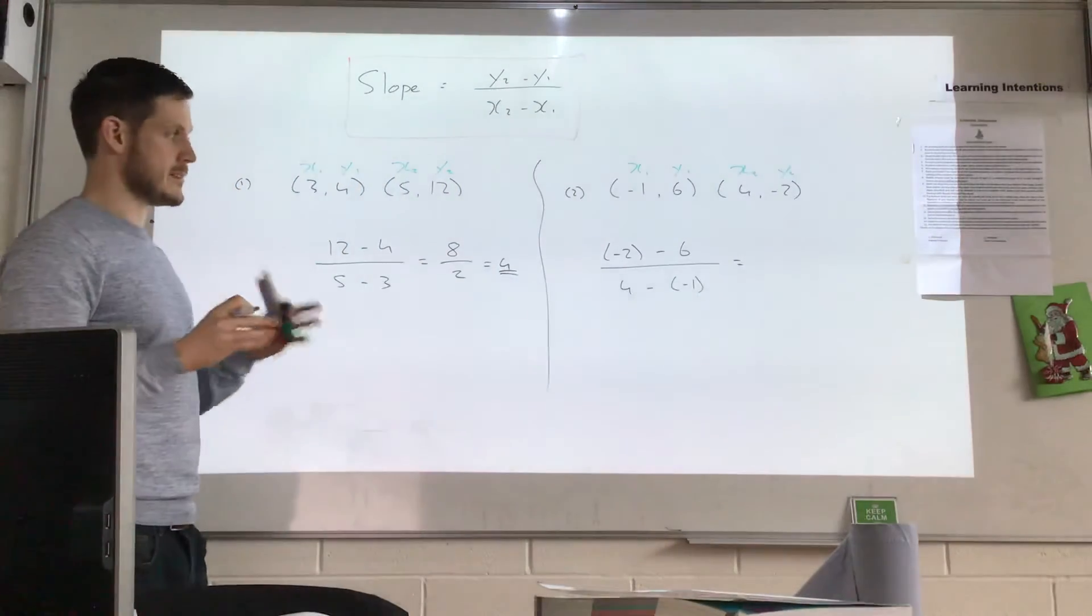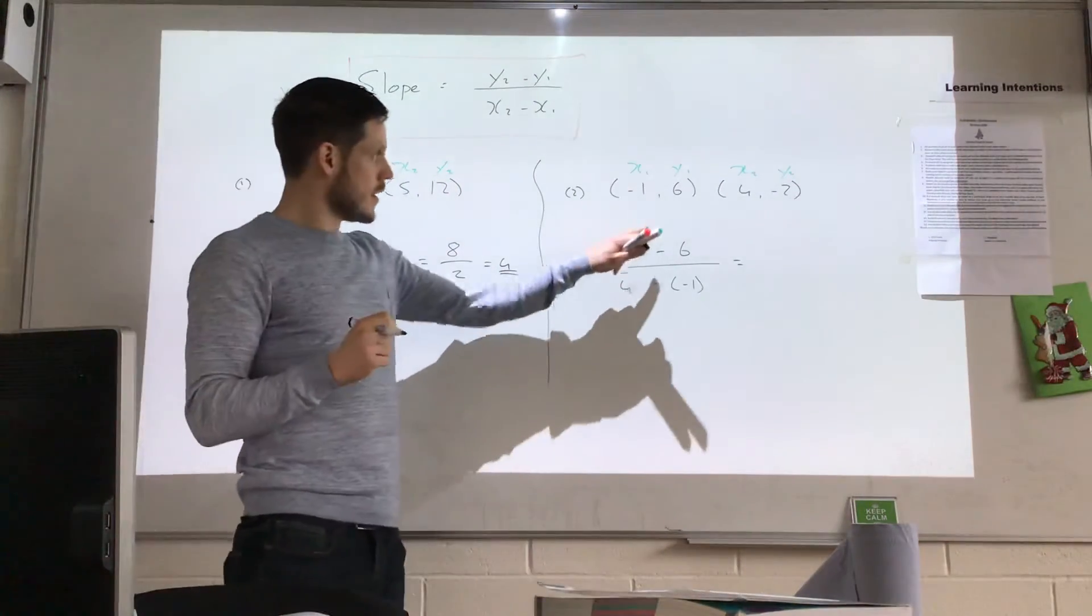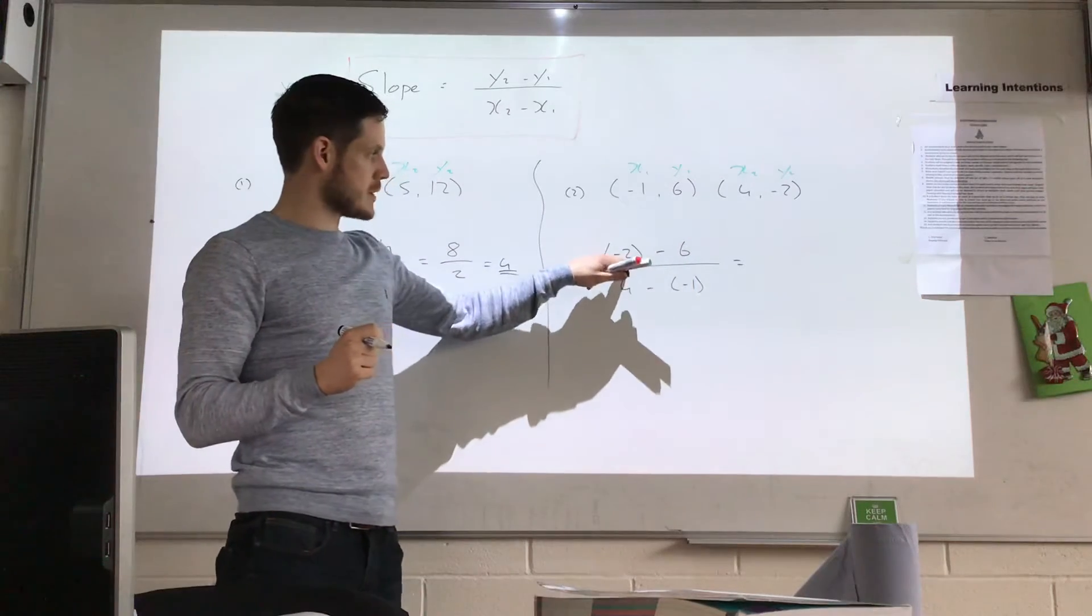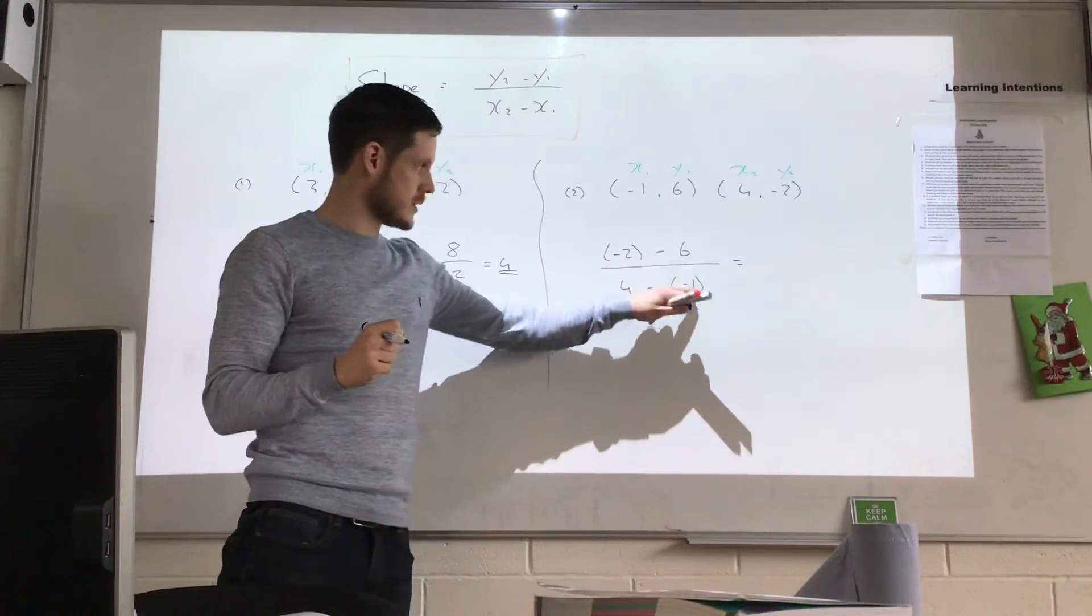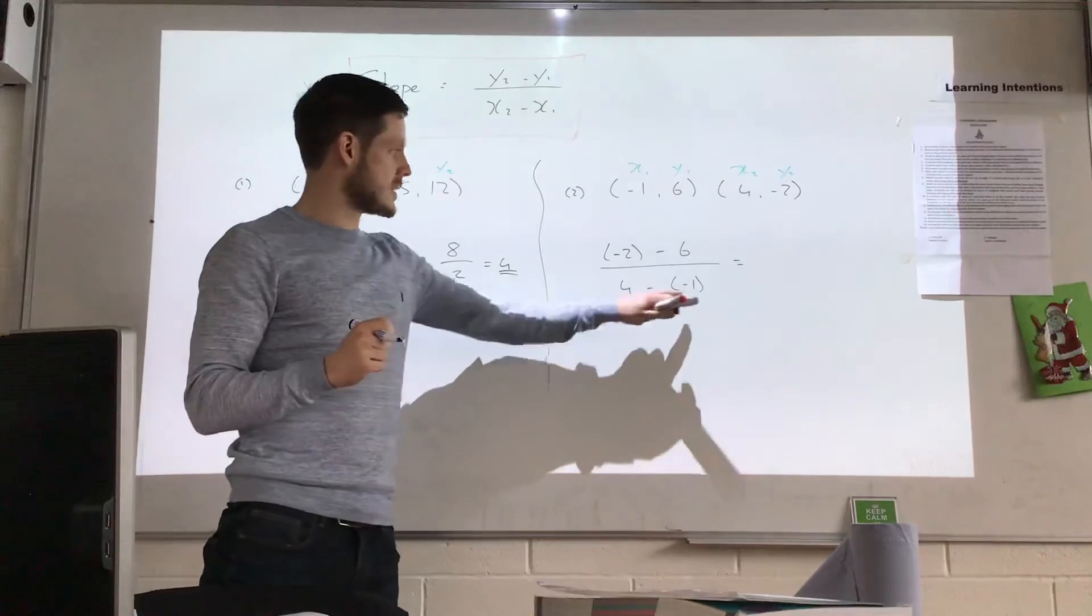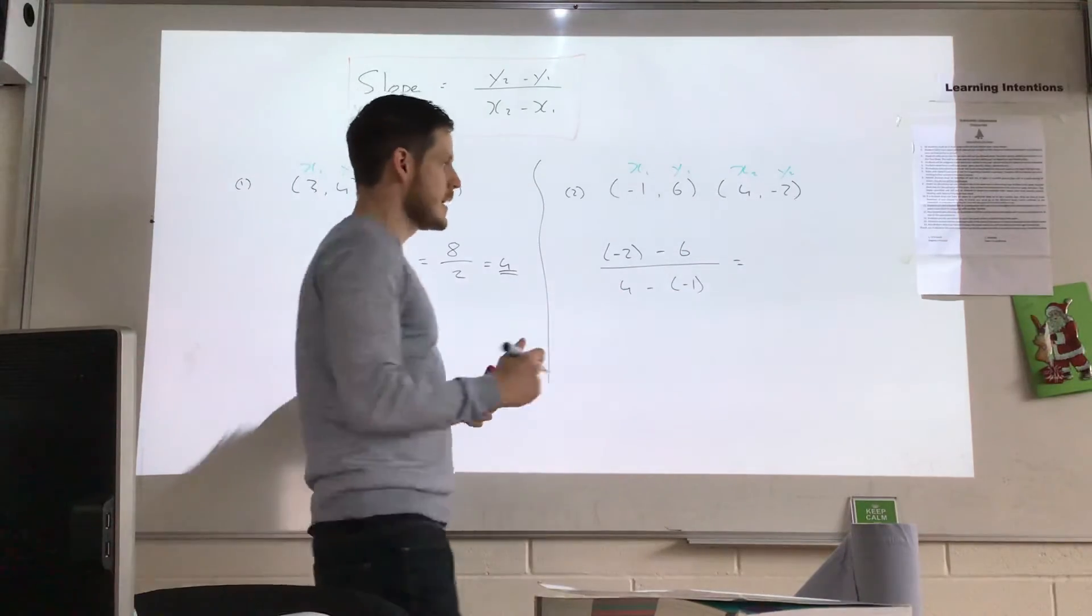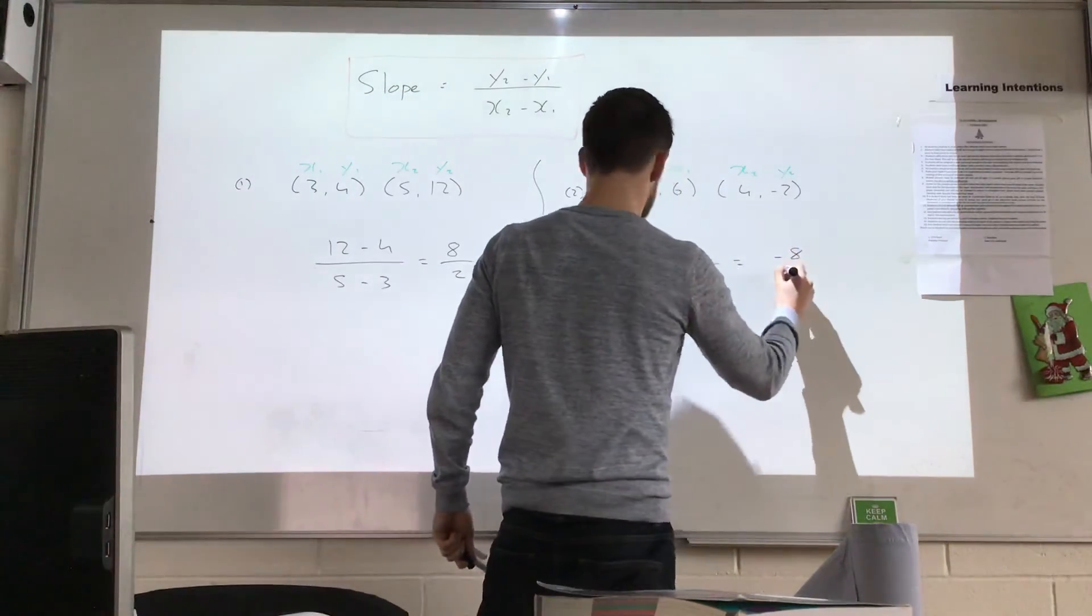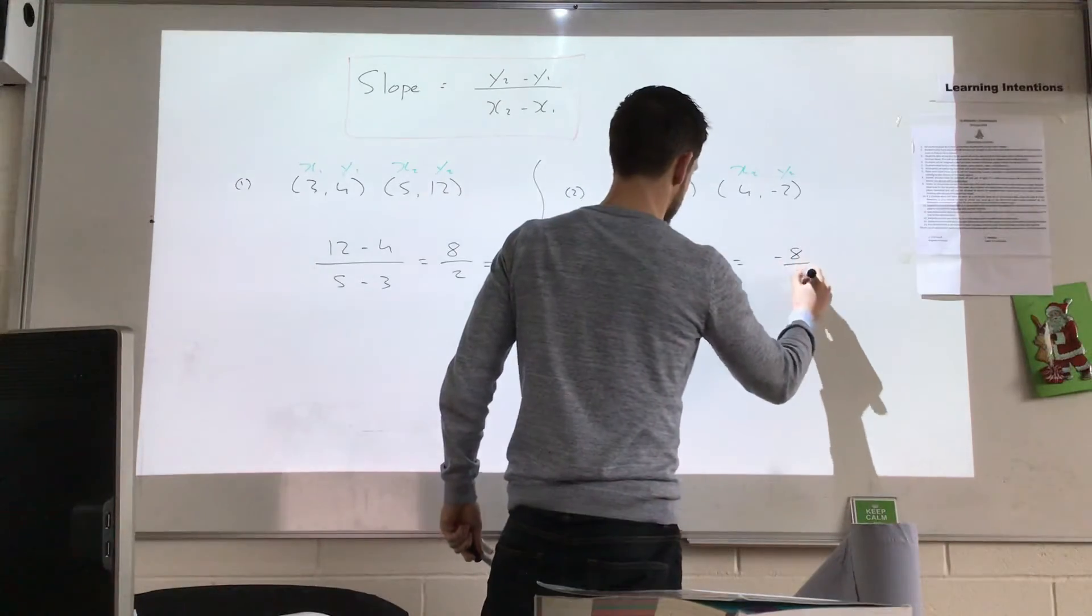But put it into your calculator. So y2 minus y1, but make sure the minus number is in brackets. x2 minus x1, make sure the negative number here is in brackets. And what you're going to get there is minus 8 over 5.